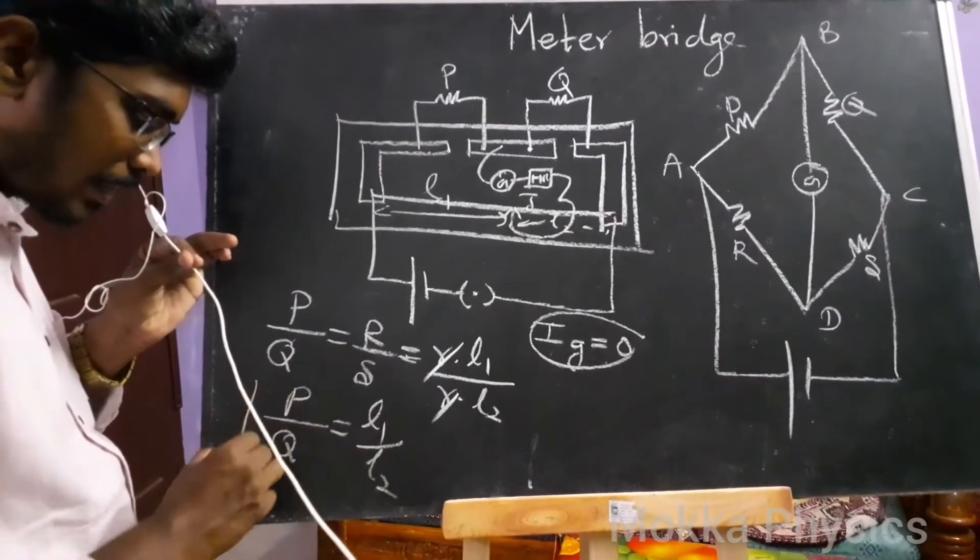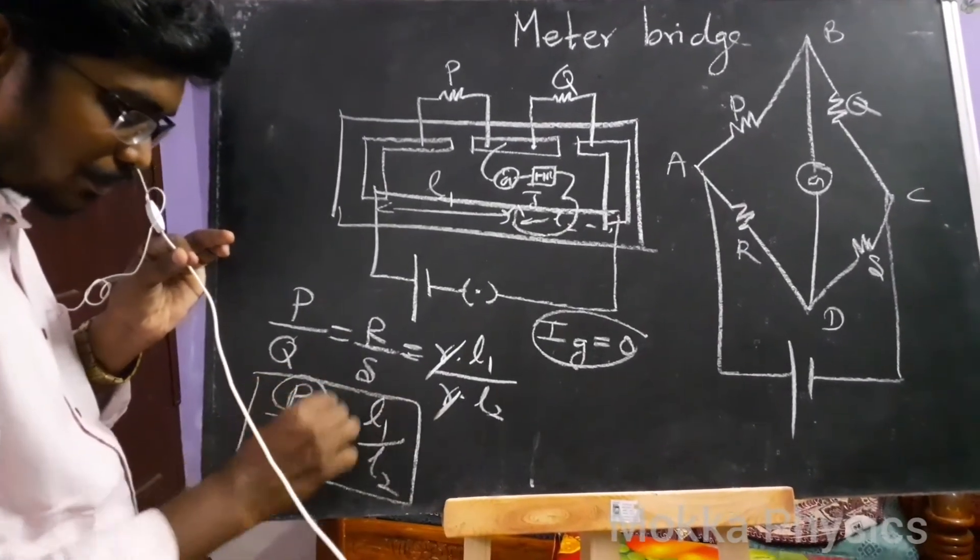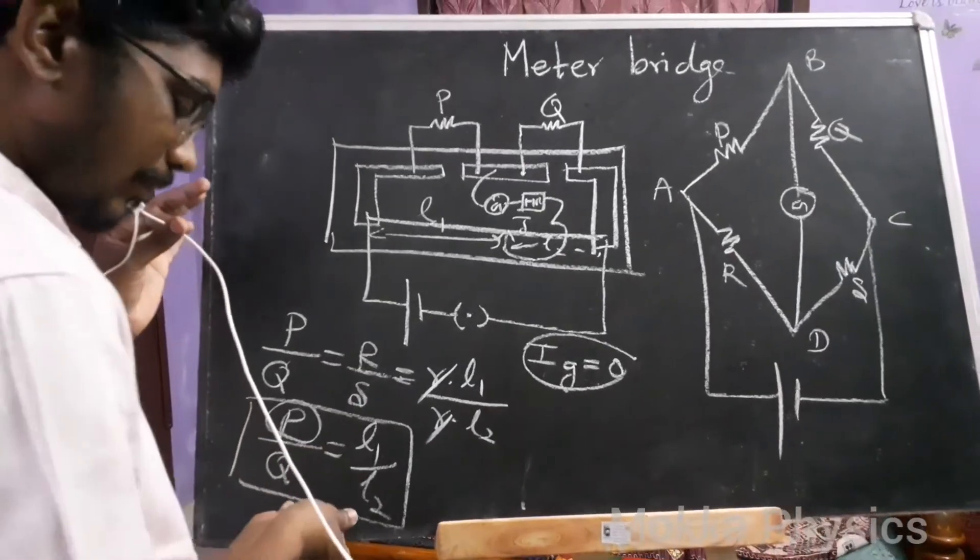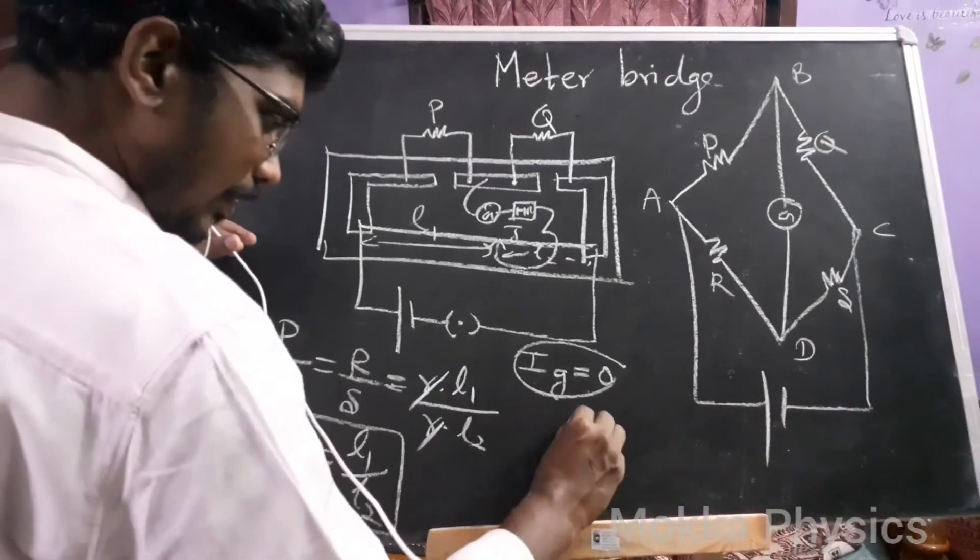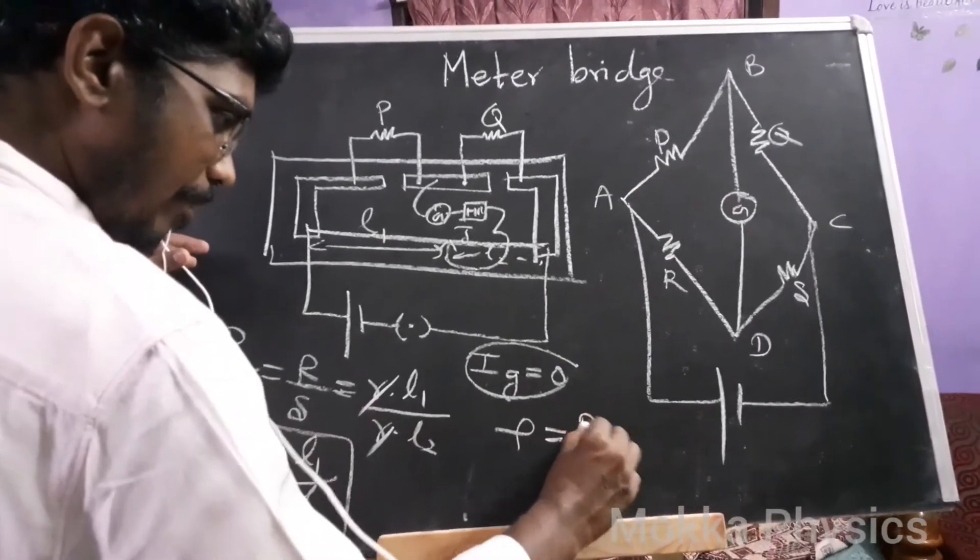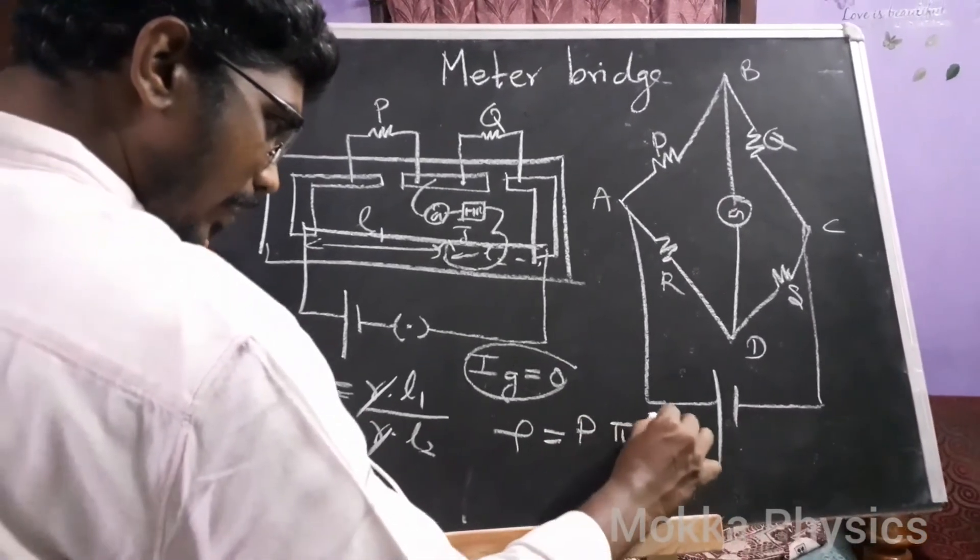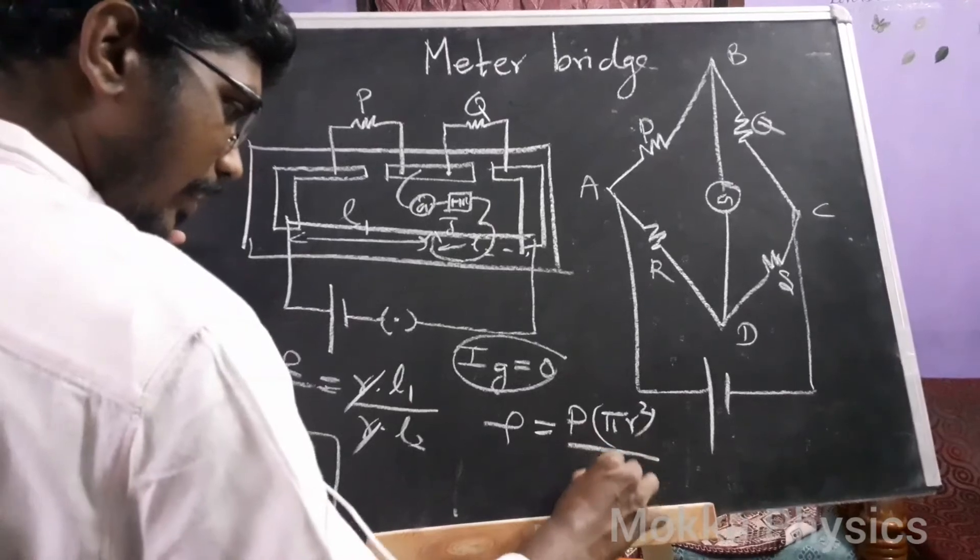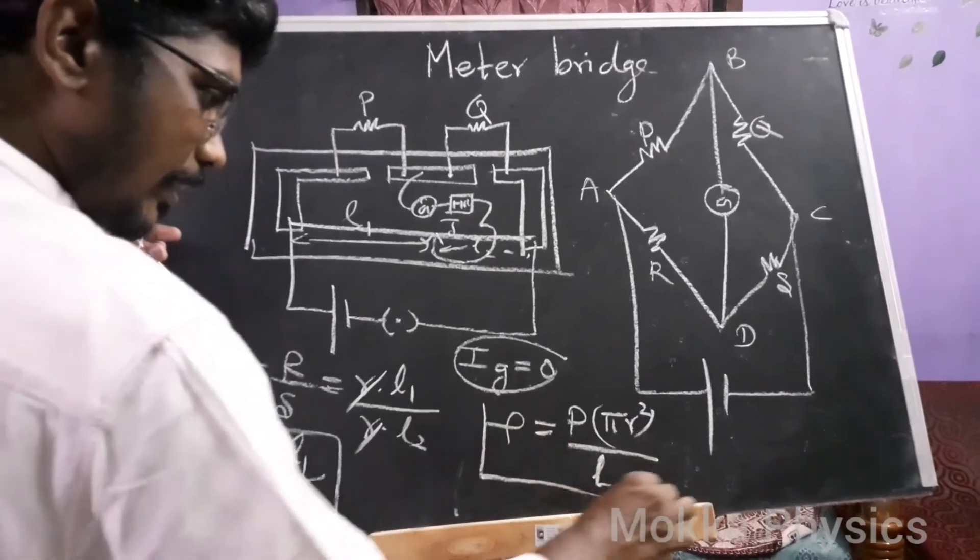This is your meter bridge. Now if you have any unknown P, if you want to find specific resistance, the specific resistance formula is rho equals P into area pi R square by length of the wire. This is how you calculate specific resistance.